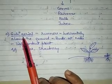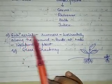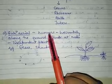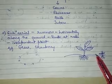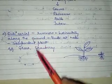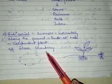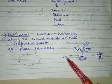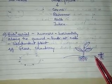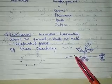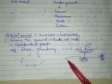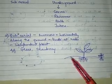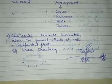Some plants have sub-aerial stems and these are called runners. Runners are found in grass and in strawberry. These stems, that is the runners, run horizontally along the ground. You can see in the diagram the strawberry runner running horizontally along the ground.